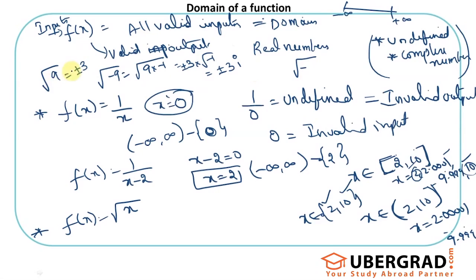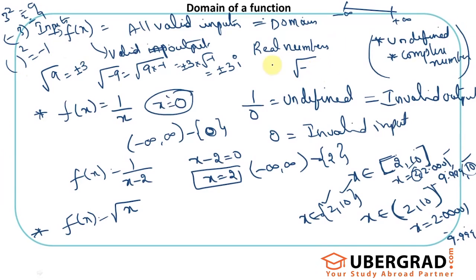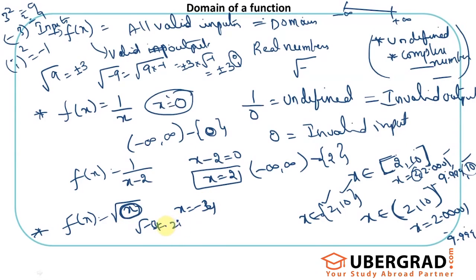√9 = 3 basically means 3² = 9 or (-3)² = 9. What square would give minus 1? None, because any real number squared is non-negative — it will never give a negative value. That's why we call it imaginary number i, where i² = -1; that's part of complex numbers. A complex output is not a valid output for us, so negative inputs for x under a square root are invalid.